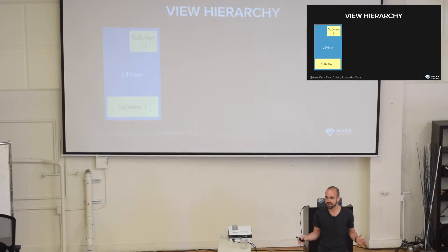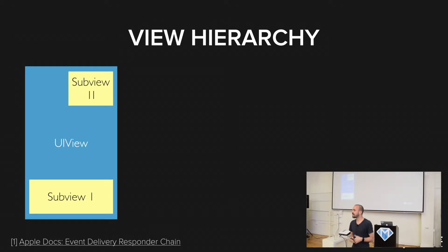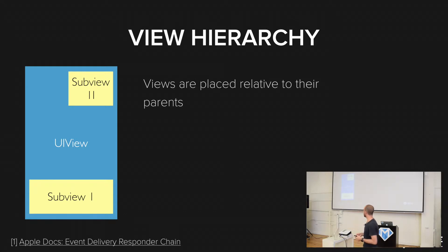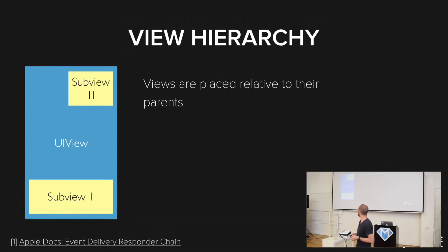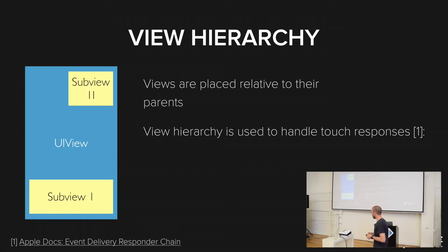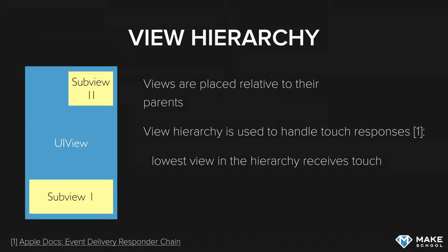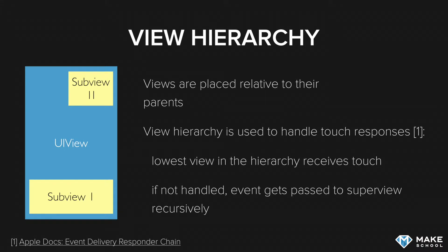Views are organized in hierarchies. Every view controller at the top has one root view. On that root view, you add subviews, and these are placed relative to their parent views. That is both relevant for positioning but also relevant for taking in user input. So if you have touch responses in your app, and a user tries to tap on an app, the lowest view in the hierarchy will try to receive that touch. If the touch is within the bounds of that subview, then that subview will receive the touch. If the touch is not within the bounds, then it will be passed up the hierarchy to its parent view.